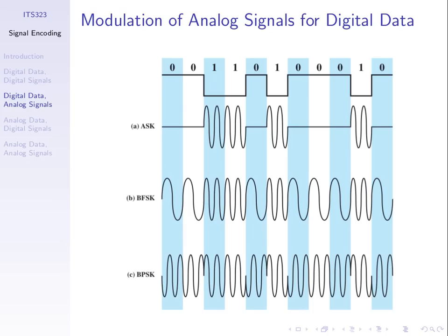We can also vary frequency and phase. For frequency shift keying, we use a low frequency signal for bit zero and a higher frequency for bit one — double the frequency in this example. The receiver measures the frequency over each period: if it's a low frequency, it knows it's bit zero; if it's a higher frequency, bit one. The exact frequencies are defined by the standard for each system. For phase shift keying, we shift the signal in time — a phase of π, for example, means the signal goes down then up instead of up then down, with bit zero having one phase and bit one the opposite.